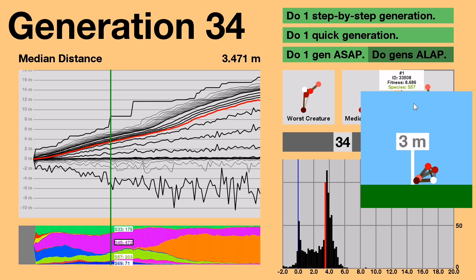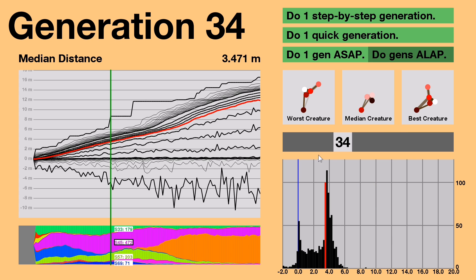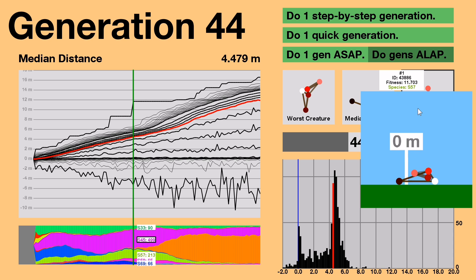The next breakthrough started where the last one left off. Notice how the back node isn't quite black. It's a very dark red. That means it doesn't have maximum friction, so it might slide just a bit. A random mutation in generation 44 fixed that. Now the back node is black, giving the creature the most grip possible when pushing off the ground. That small adjustment gave the creature 3 more meters of distance.